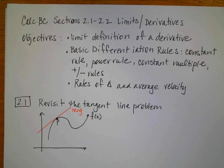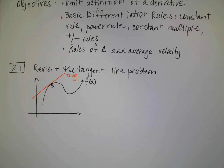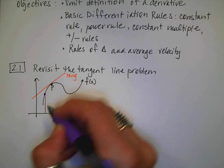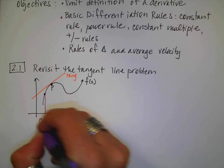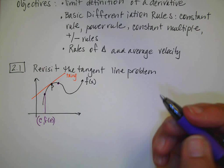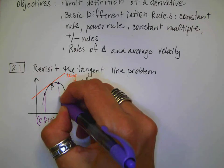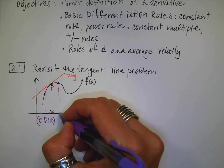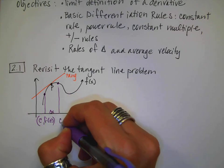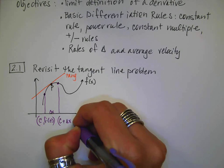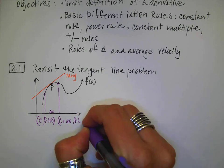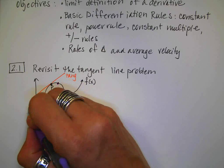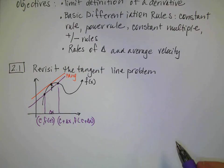If you'll remember, the first thing we do when we start the tangent problem is talk about the secant. I could pick a point with coordinates c and f(c), then pick another point and move over in x - so I have a delta x, because the x has changed and gotten bigger. This coordinate is c plus delta x, meaning the y-coordinate is f of c plus delta x, and those would be the coordinates. Then I can draw my secant line through those two points.